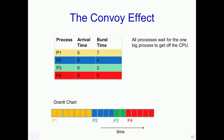Another characteristic of FCFS is the convoy effect: all processes wait for one big process to get off the CPU. In our example, even though all processes enter at the same time, all must wait for P1 to complete before they can be scheduled. If P1 had a burst of 100 cycles instead of 7, P2, P3, and P4 would wait 100 cycles before getting CPU time — a significant drawback.